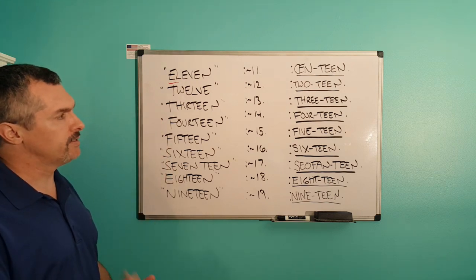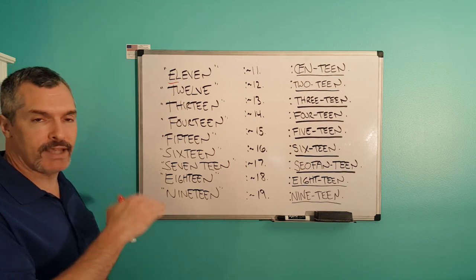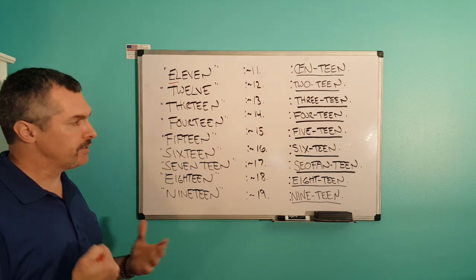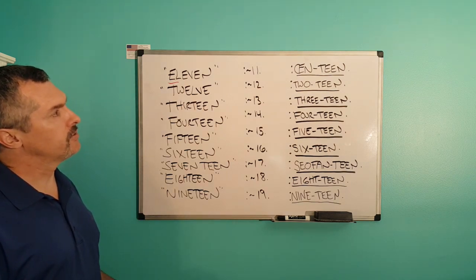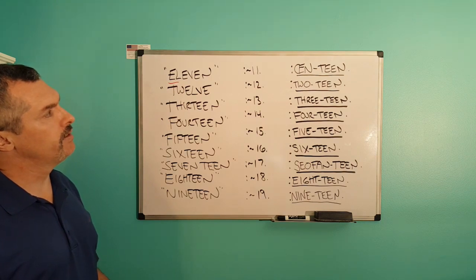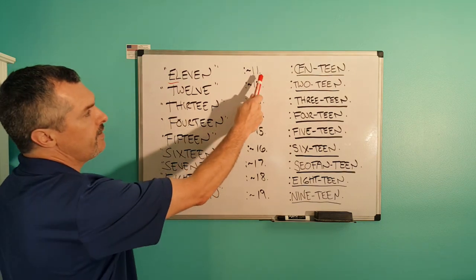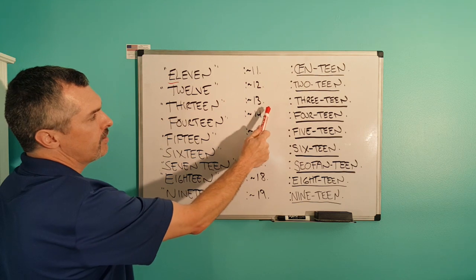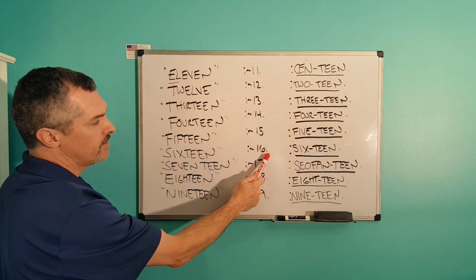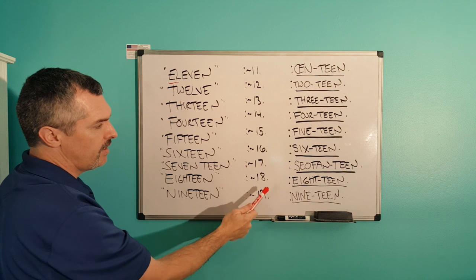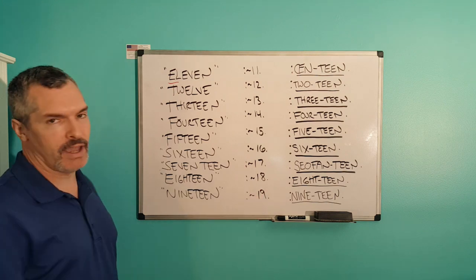So I wanted to create a consistency and a clarity, a set pattern that you could see. And so therefore I created one teen, two teen, three teen, 14, 15, 16, 17, 18, and 19.